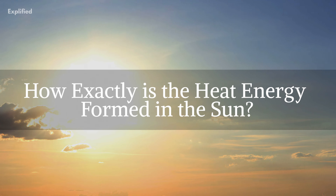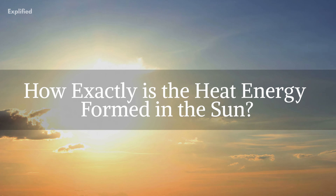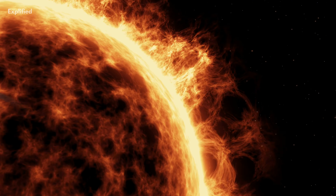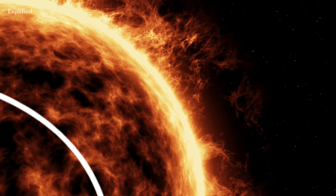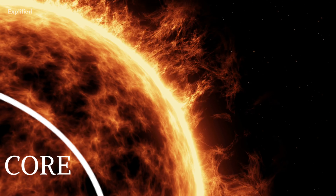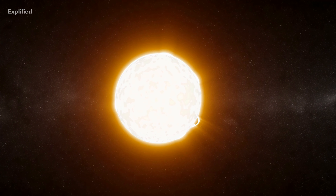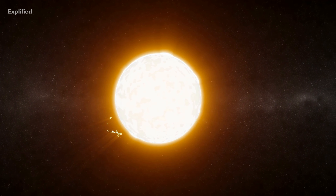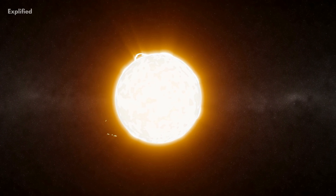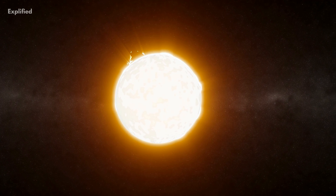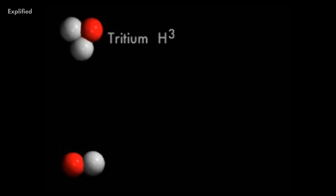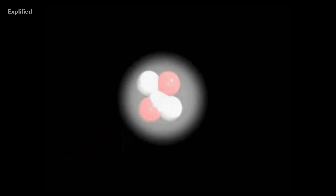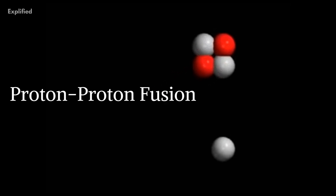So how exactly is the heat energy formed in the sun? The center of the sun is known as its core. The process of nuclear fusion takes place in the sun's core, and this is where the light and heat energy is generated. In the core, hydrogen is converted into helium — this particular fusion reaction is known as proton-proton fusion.